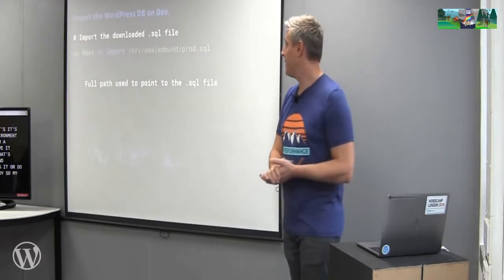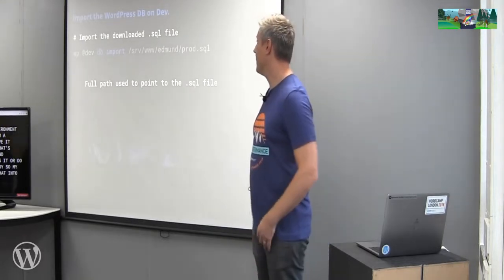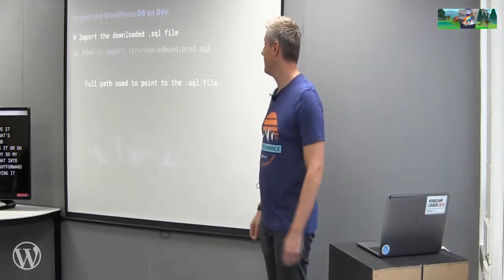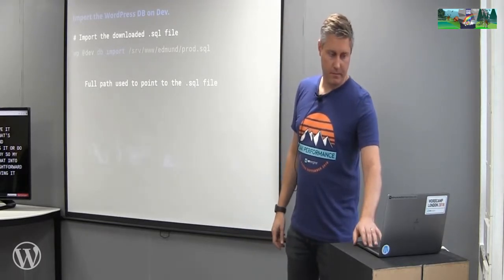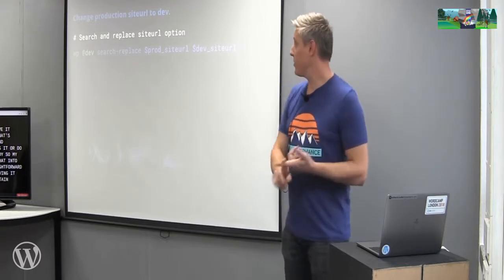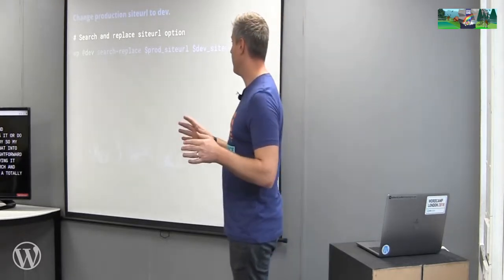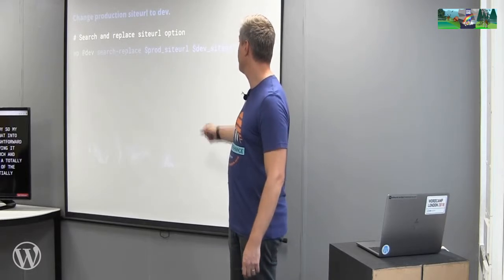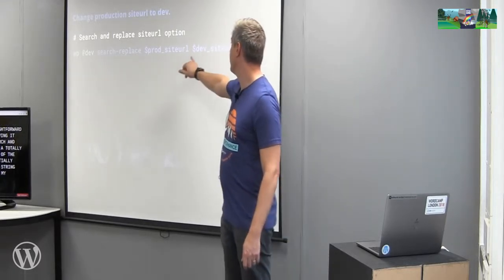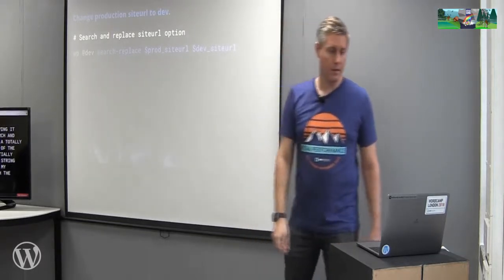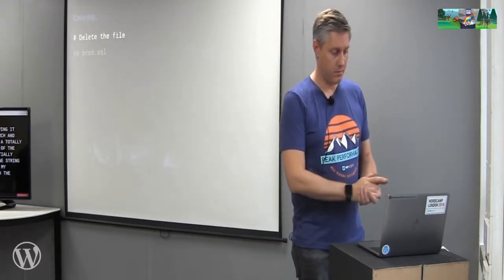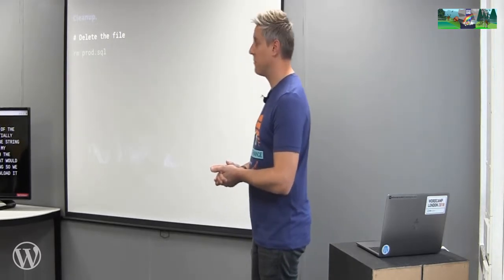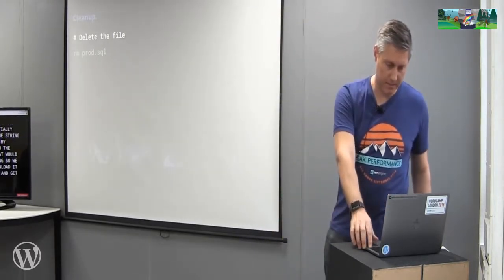My next step is to import that into my dev environment — very straightforward: 'wp @dev db import' with the path to the file. There's also a search-and-replace function — not part of the database command, but it will search for one string and replace with another, so I've got my production site URL replacing it with the dev site URL. Then some housekeeping: we take the file we downloaded and remove it simply with the 'rm' command.